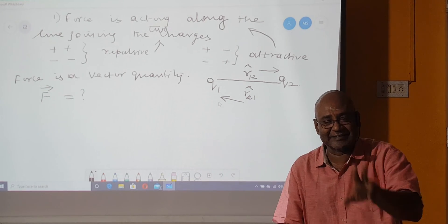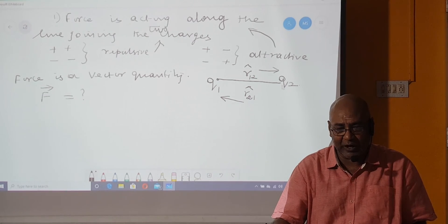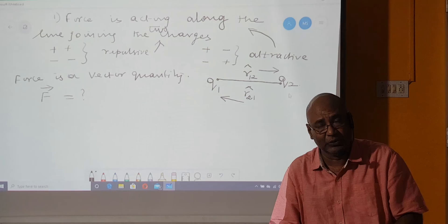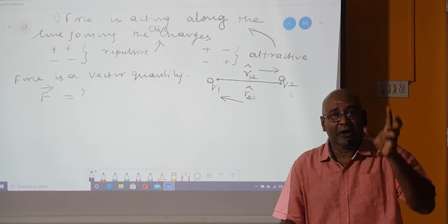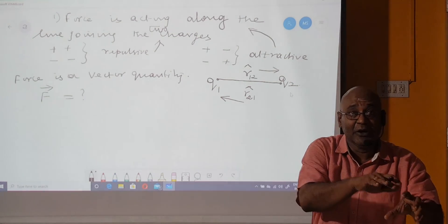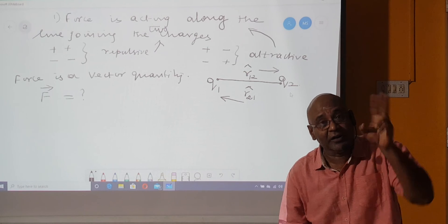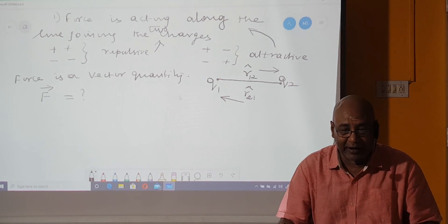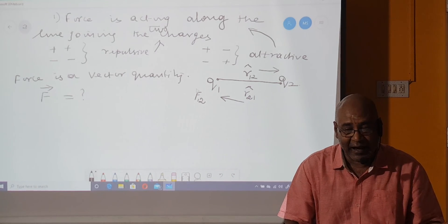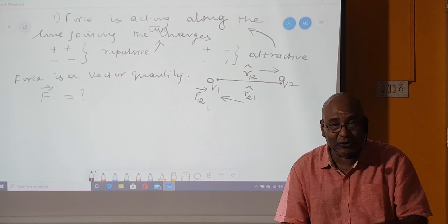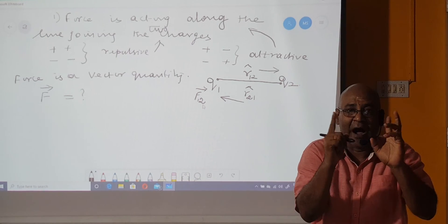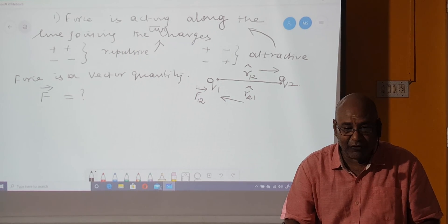Now let us consider the force acting on Q1 or Q2 — either repulsive or attractive. The force on Q1 due to the second charge is written as F₁₂ as a vector quantity. F₁₂ is the force acting on the first charge due to the second charge. If both charges are of the same type — both positive or both negative — then this F₁₂ acts as a repulsive force along the line joining the charges.